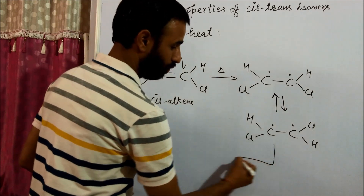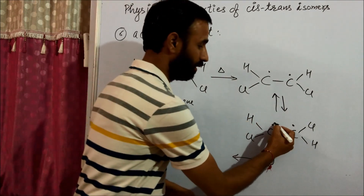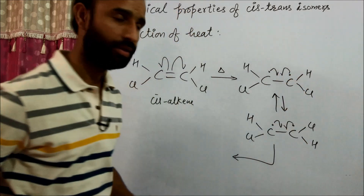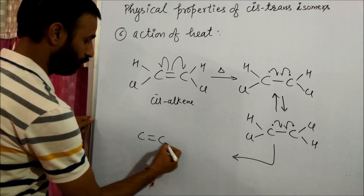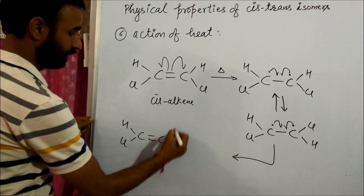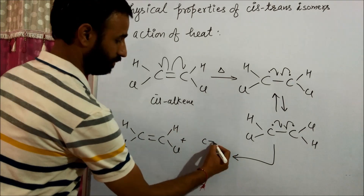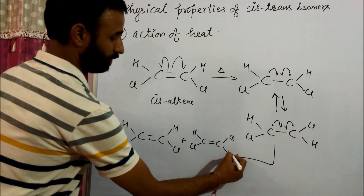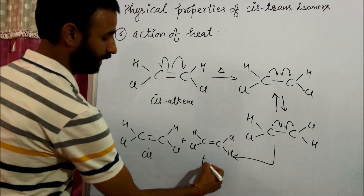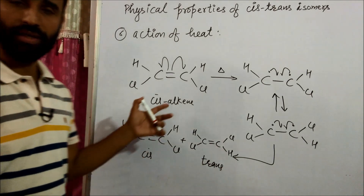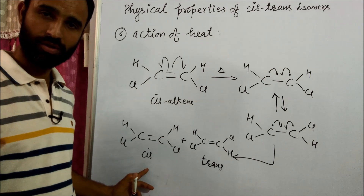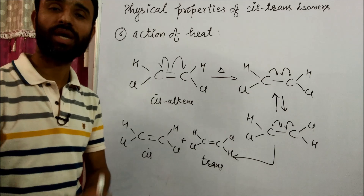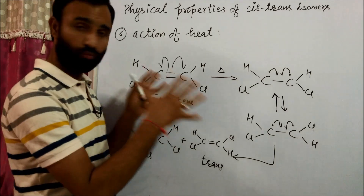So these two forms — cis and trans — are in equilibrium. When they recombine, we get two products: cis alkene as well as trans alkene. So on heating, cis alkene gives a mixture of cis and trans. Similarly, trans alkene can also give a mixture of cis and trans on heating.